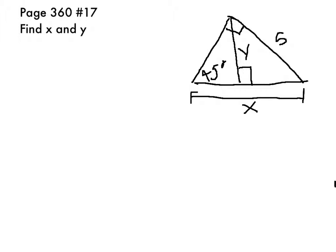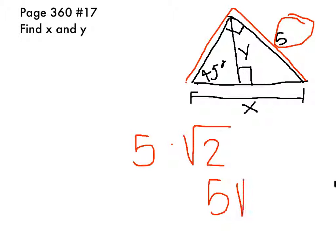Since x is the hypotenuse of this triangle right here, you multiply 5 from right here times square root 2, and the answer is 5 root 2.